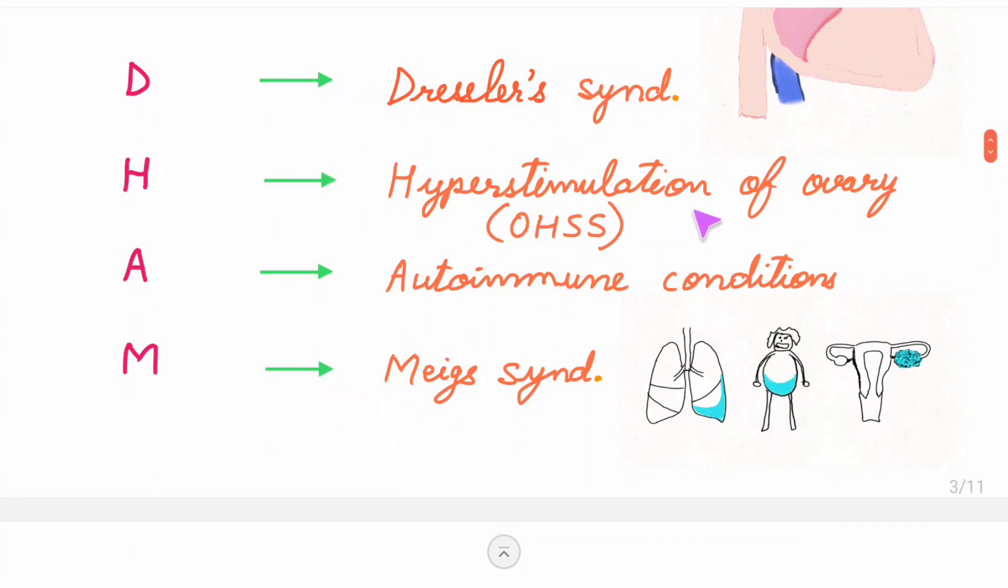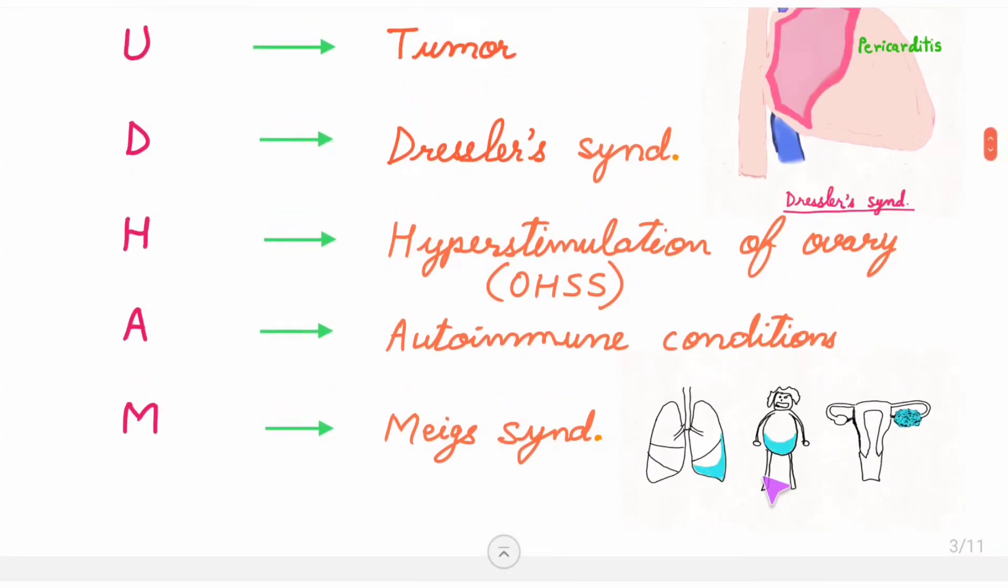H for hyperstimulation of ovary, that is ovarian hyperstimulation syndrome (OHSS), autoimmune conditions, and Meigs syndrome. Meigs syndrome consists of a triad of three conditions: pleural effusion, ascites, and ovarian tumor.